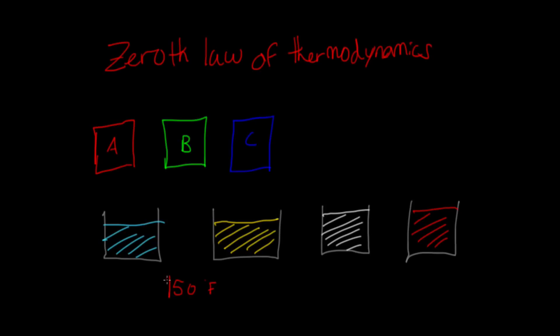And they thought this was important enough to make it its own law. The only thing is, they had already made laws 1, 2, and 3 by the time they realized this. And since they realized it had to go first, they called it the zeroth law. So that's why it has that name, in case you didn't know.